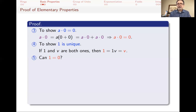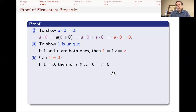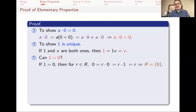To prove one and zero are different when the ring has at least two elements: suppose one equals zero. For any element r in the ring, r times zero equals zero, but this zero is also one, so r times one equals r. This forces r to equal zero. So every element of the ring would be zero, meaning the ring has only one element. Therefore, whenever the ring has two or more elements, one cannot equal zero.